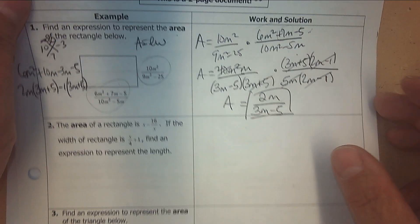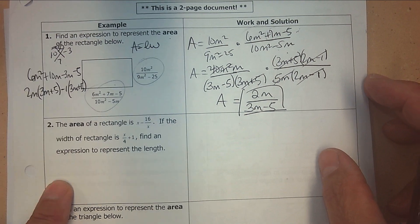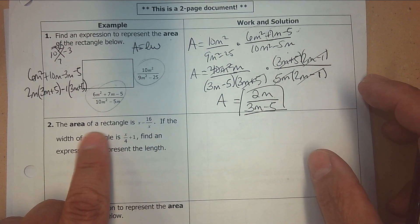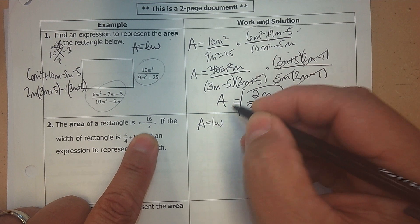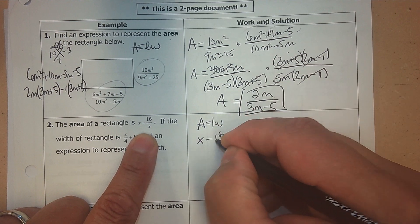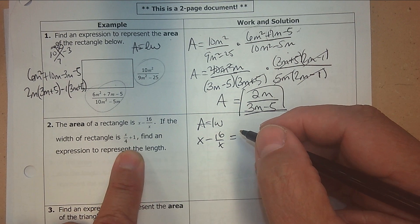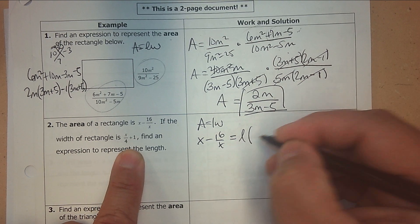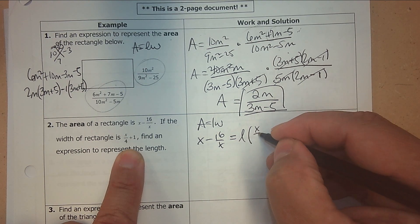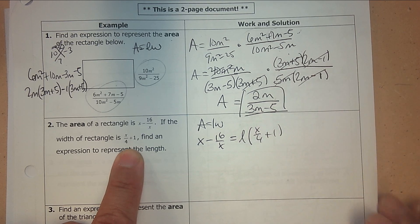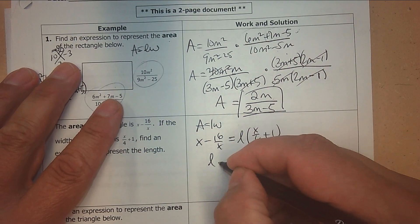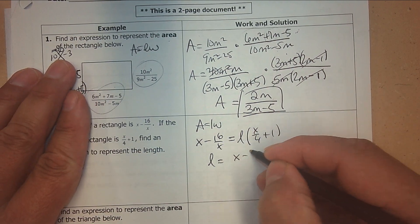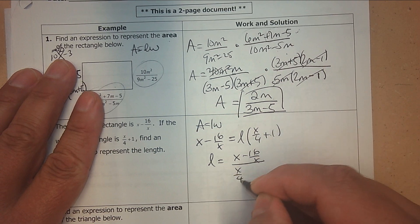Number 2. Again, the area of a rectangle, but this time you're given it. The area is x subtract 16 over x. The width is x over 4 plus 1. My goal is to get the length by itself, so I'm going to divide by x over 4 plus 1.